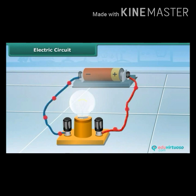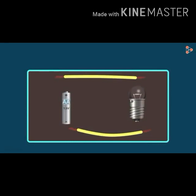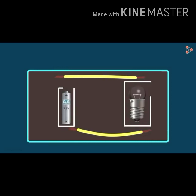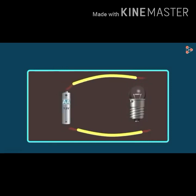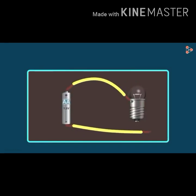You will see that the bulb glows because the electrons start flowing through the circuit and the circuit is complete. What we did was connect the positive terminal of the cell to one terminal of the bulb and complete the circuit by connecting the negative terminal of the cell to the second terminal of the bulb. The bulb then glows.